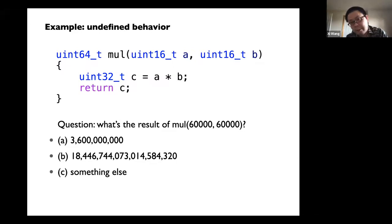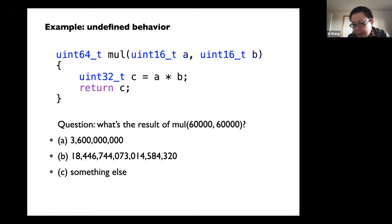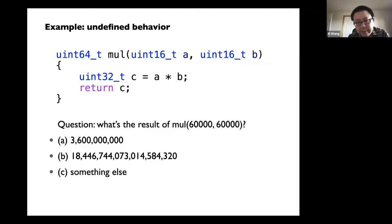That's all the code. And if you say, oh, here's a bug in the code, can you spot it? If you stare at it for a while, the code looks fine. But if you think about it — you can try to play with this using GCC yourself. Try to invoke the function with, say, 60,000 and 60,000 and try to compute the product. What result will you get?